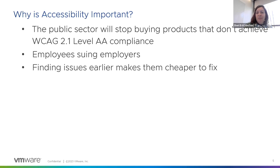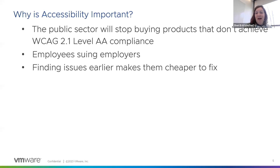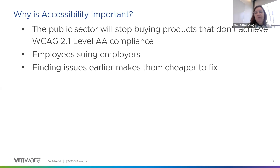Finding issues earlier makes them cheaper to fix. In software testing, we have this thing called the rule of 10: every phase that you could have fixed something and didn't, if it gets discovered and fixed in the phase after, it's 10 times more expensive than it was to fix in the previous stage. It's really important to include accessibility from the beginning, because if all you're doing is waiting until the software's done and then finding a bunch of accessibility bugs, it's too late to fix things easily and cheaply. You're either going to release with a boatload of issues or have to delay your release.